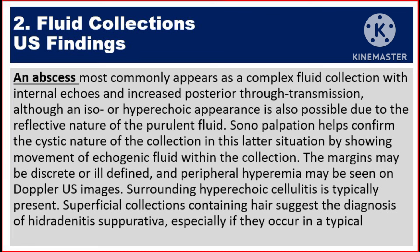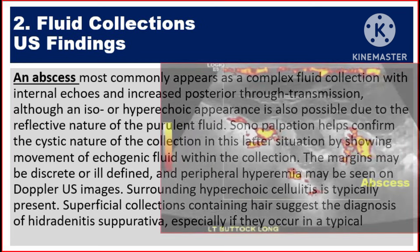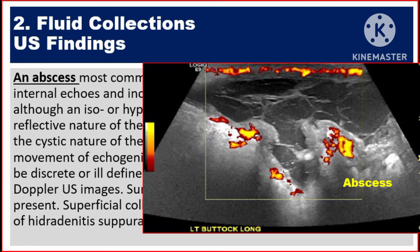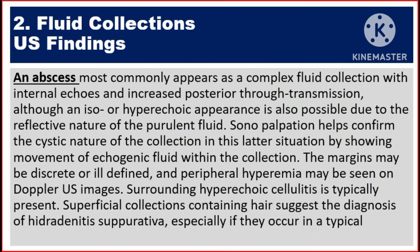Ultrasound findings. An abscess most commonly appears as a complex fluid collection with internal echoes and increased posterior through transmission. Although an iso- or hyper-echoic appearance is also possible due to the reflective nature of the purulent fluid. Sonopalpation helps confirm the cystic nature of the collection by showing movement of echogenic fluid within the collection. The margins may be discrete or ill-defined, and peripheral hyperemia may be seen on Doppler ultrasound images.